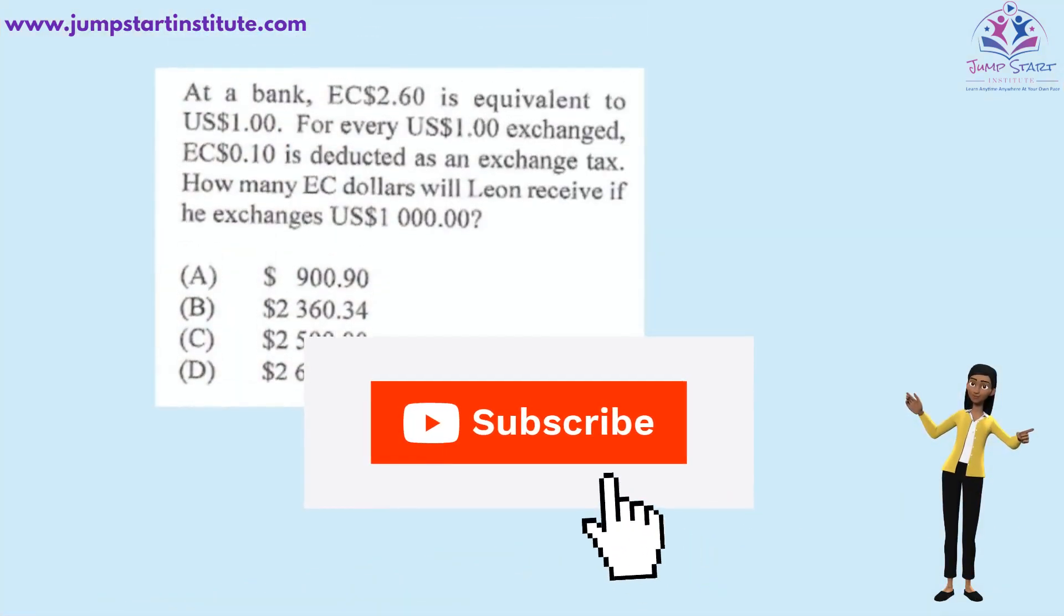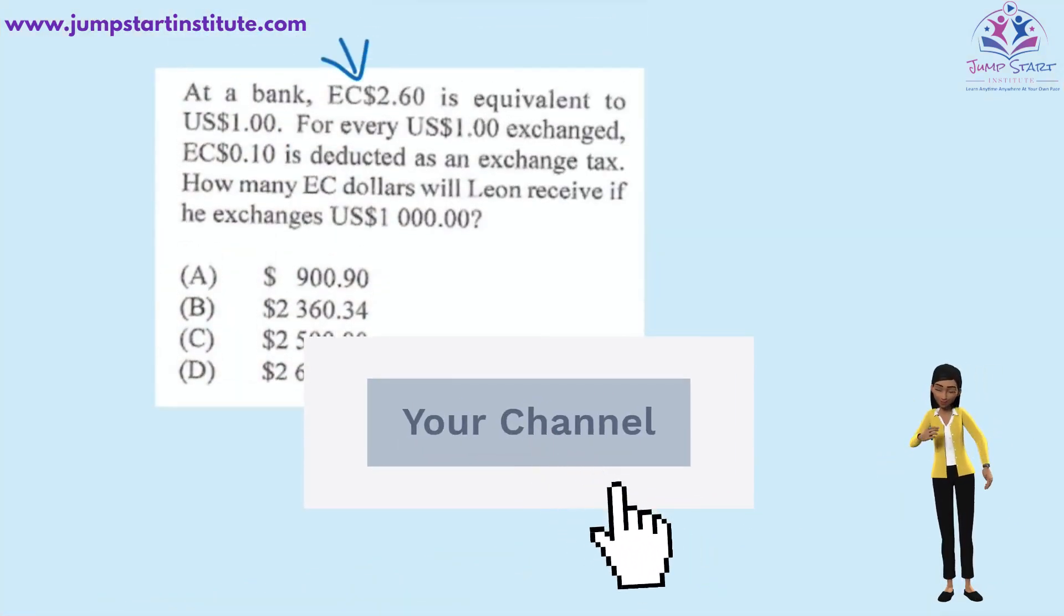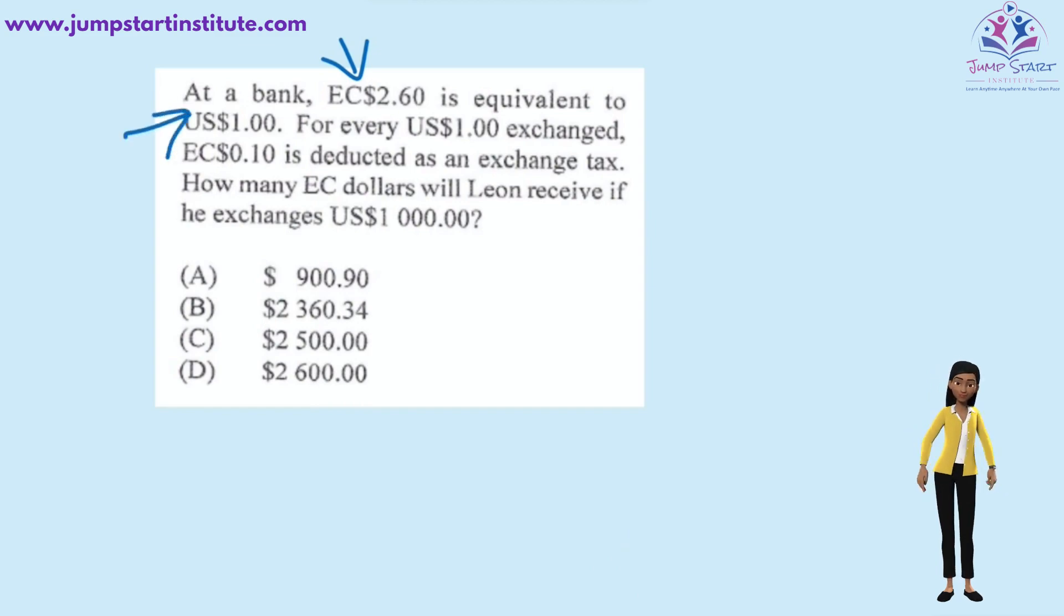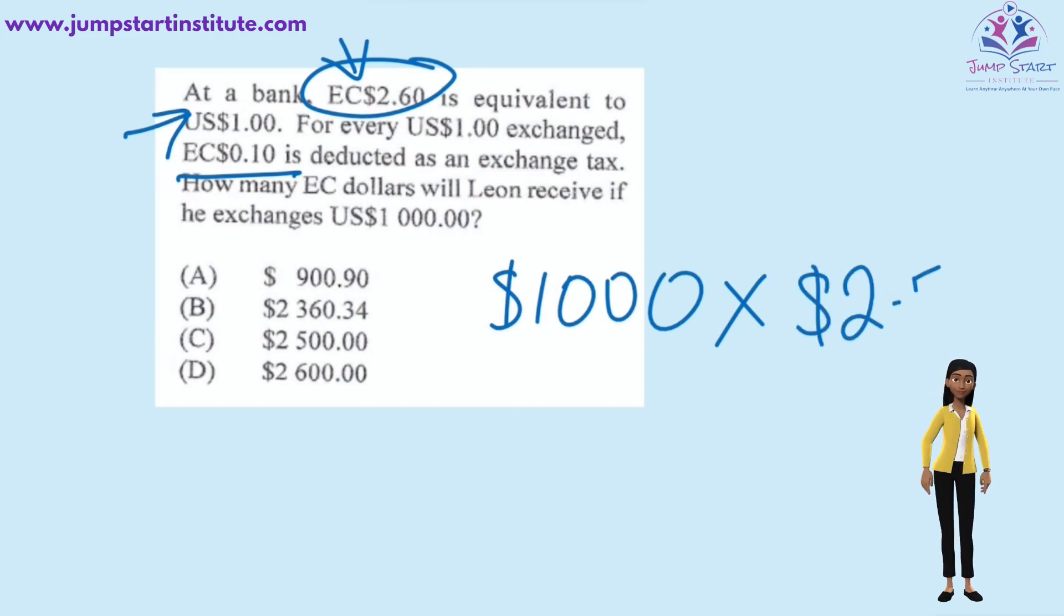At a bank, EC $2.60 is equivalent to US $1. For every US $1 exchanged, EC $0.10 is deducted as an exchange tax. How many EC dollars will Leon receive if he exchanged US $1,000? Because EC $0.10 will be deducted as an exchange tax on every US $1, we simply multiply $1,000 not by $2.60, but by $2.50. This is because we have deducted the 10 cents from the $2.60 for tax.